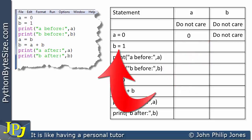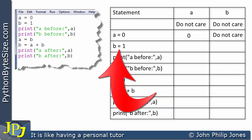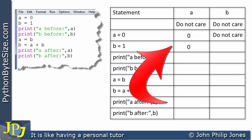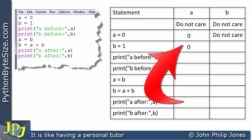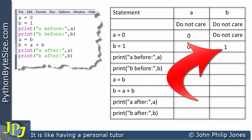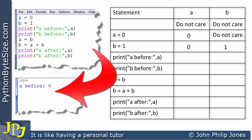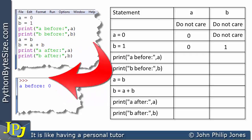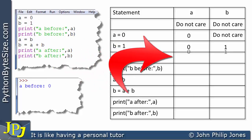When B is assigned 1, we ask what that does to A — nothing, so we copy the zero down. But B assigned 1 does affect the B column, and we can see B now has the value of 1. We then come to the print statement that prints A, and of course this statement has no effect on variables A and B, so we copy their values down.